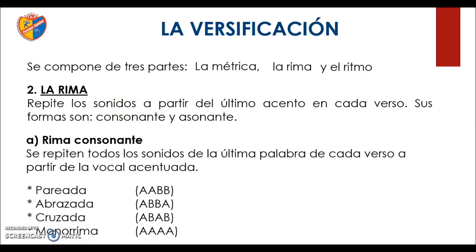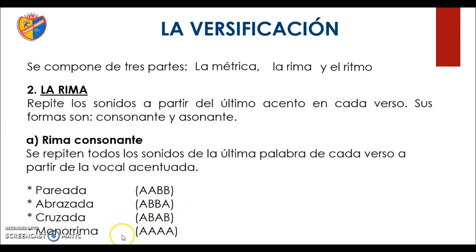Dependiendo de la estructura de los versos o de las estrofas que se presenten, vamos a encontrar una rima consonante pareada, una rima consonante abrazada, una rima consonante cruzada o una rima consonante monorrimo. Si observan, van a darse cuenta que cada una de ellas tiene una estructura. Por ejemplo, la pareada es A-A-B-B, la abrazada es A-B-B-A, la cruzada es A-B-A-B y la monorrimo es A-A-A-A.